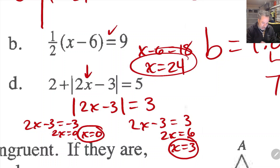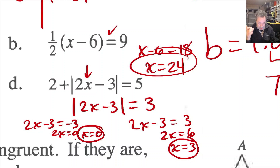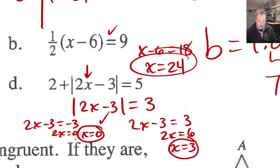My two answers are x equals 0 and x equals 3. If I put 0 in: 2 plus the absolute value of negative 3 is 2 plus 3, which is 5 — it checks. If I put 3 in: 2 times 3 is 6, minus 3 is 3, absolute value of 3 is 3, 2 plus 3 is 5 — it checks for this answer also.